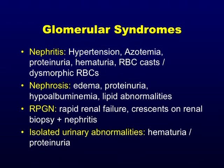Nephritis — glomerulonephritis — presents with hypertension, abnormal kidney function, albuminuria, hematuria, red cell casts, and dysmorphic red cells. Once you see someone with glomerulonephritis, there are only two directions: primary or secondary. If it's primary, it won't have associated abnormalities in skin, joints, or abdomen. Given those other findings, it's going to be a secondary form of glomerulonephritis. You use your clinical assessment and lab values to determine the type.